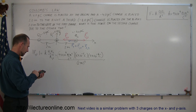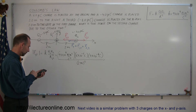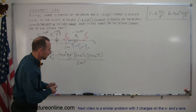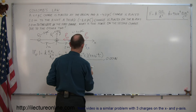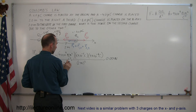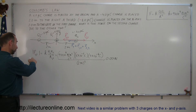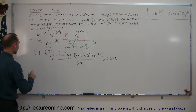Grabbing the calculator: 9e9 times 6e-6 times 4e-6, divided by 4, gives us 0.054 newtons. We now have the magnitude of the first force.